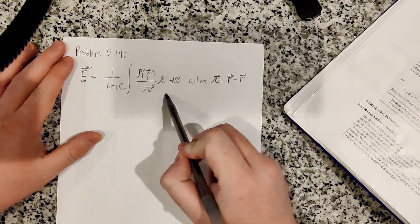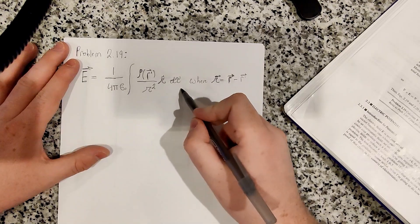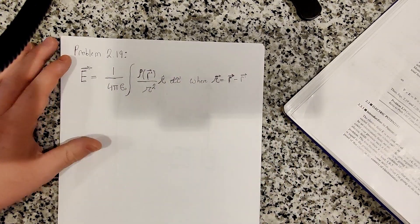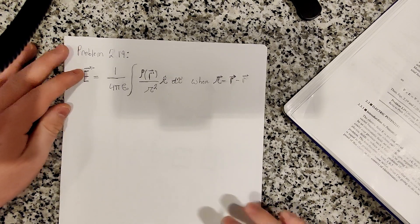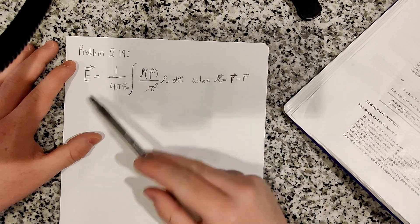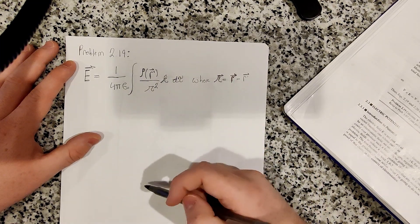So it's just the general three-dimensional form of Coulomb's law, essentially. It just tells you the general three-dimensional equation for how to calculate the electric field.